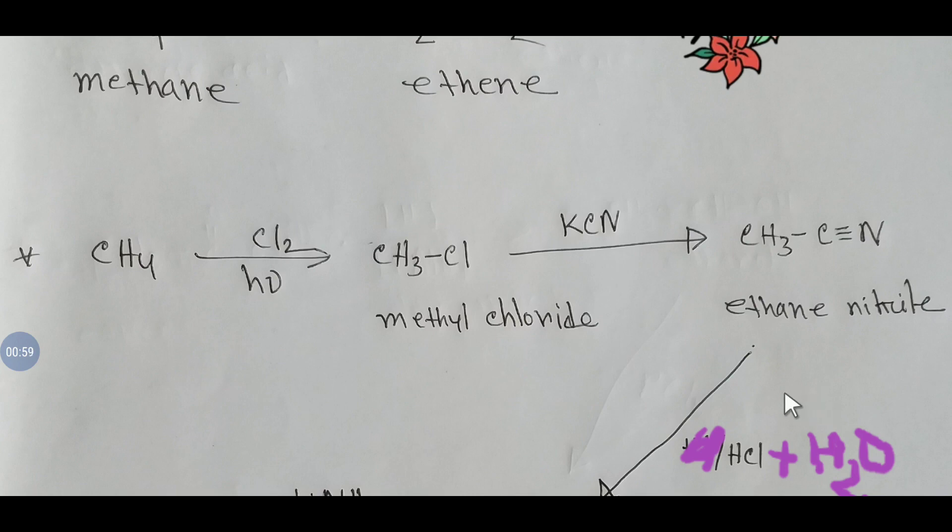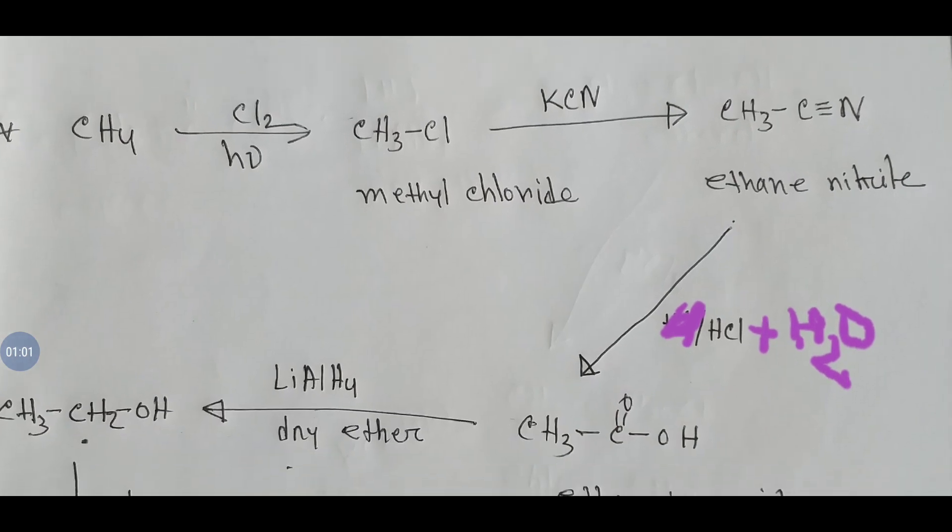If you hydrolyze this ethane nitrile with HCl and water, the cyanide radical will convert to a carboxylic acid group. This gives ethanoic acid.